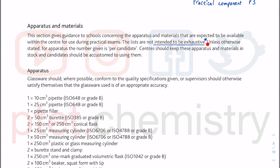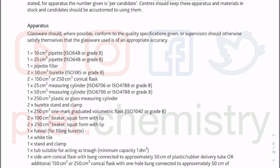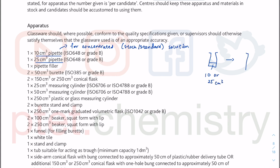These are the majority of apparatus involved in experiments you'll be expected to perform in a school laboratory setting. Looking at the apparatus list — don't worry too much about the ISO grading, those are just international standards. We could have a 10 cm³ pipette or a 25 cm³ pipette. The 10 cm³ pipette is usually for concentrated solutions — your stock or standard solutions — and you want to dilute the stock solutions. You would use a pipette to take out 10 or 25 cm³.